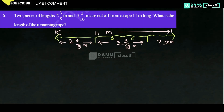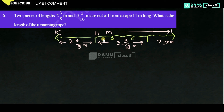In this next question, two pieces of rope of length 2 and 3 by 5 meters and 3 and 3 by 10 meters are cut off from a rope. The rope came from an 11-meter rope. We need to find the length of the remaining rope.